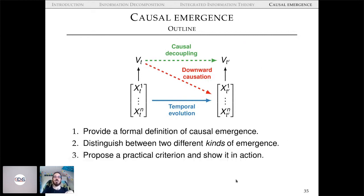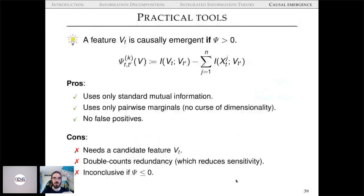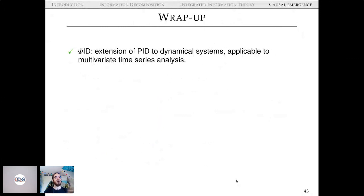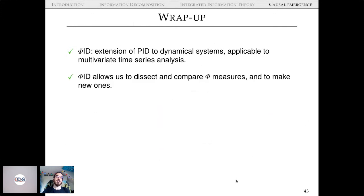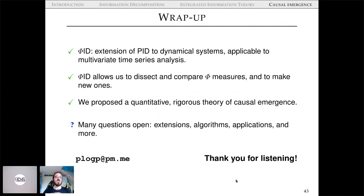We propose practical criteria and demonstrate them in the paper, which is the topic of my main track talk with code 014 — go rewatch it. We show exciting results on the Game of Life and motor decoding. To wrap up: Φ-ID is an extension of PID to dynamical systems applicable to multivariate analysis, opening new applications of PID, allowing us to dissect and compare Φ measures, propose new ones, and develop a quantitative theory of causal emergence.